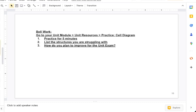You're going to go to your unit module, unit resources, and find the practice cell diagram. In order to practice for your exam, because these structures will be on your exam, you need to know how to label the cell diagram. So you're going to practice for five minutes, list the structures you're struggling with, and list how you plan to improve your cell labeling for the exam.